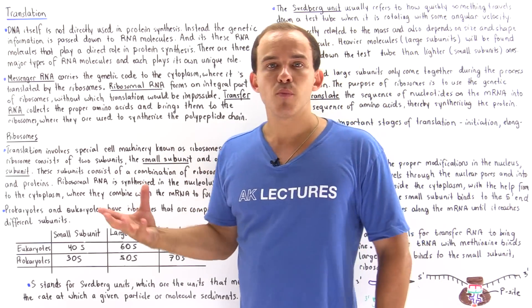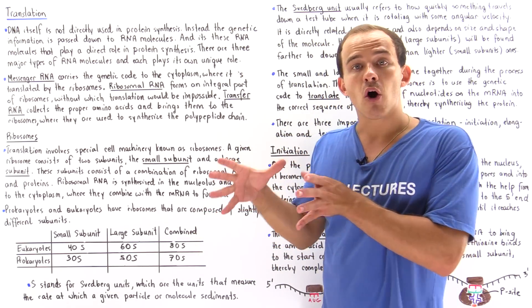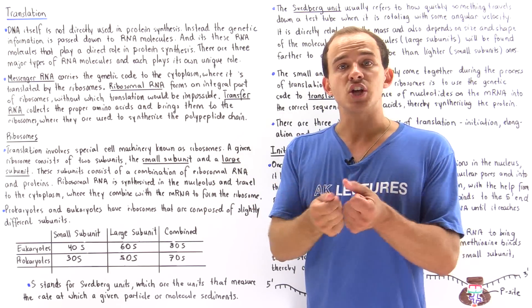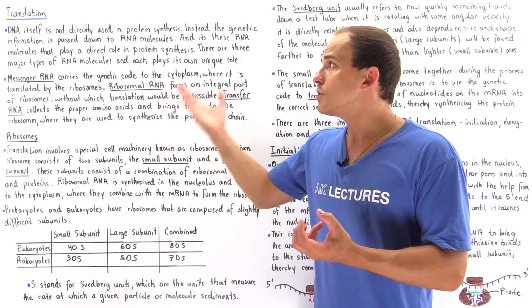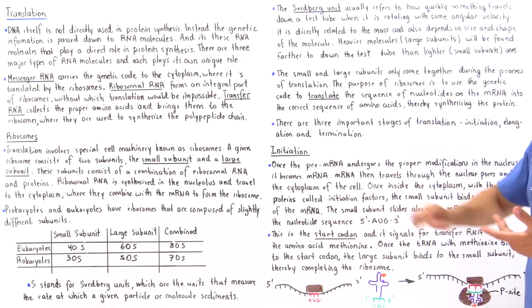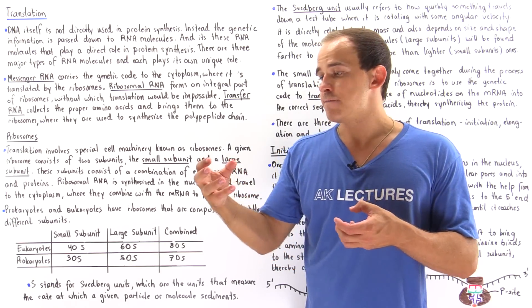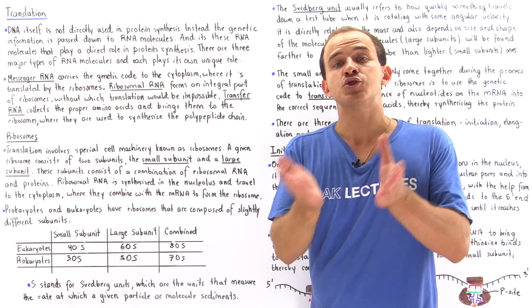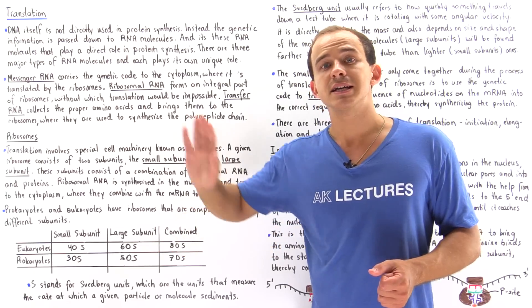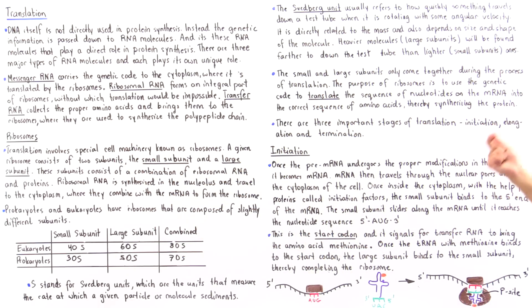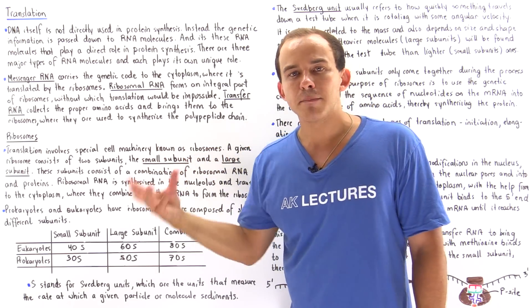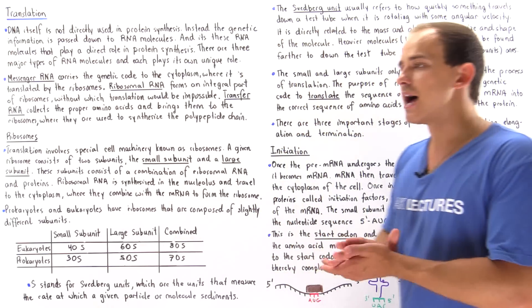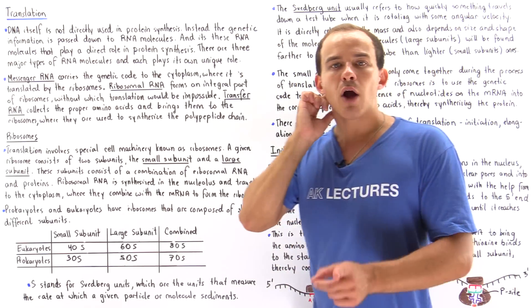What exactly is the purpose of these small and large subunits? Before translation actually takes place, the small and large subunits are separated — they only come together during the process of translation. The purpose of the ribosome is to translate the sequence of nucleotides into the proper sequence of amino acids. This is exactly what we mean by translation: the ribosomes translate the language of the mRNA into the language of our protein, thereby synthesizing our proteins using our genetic code.